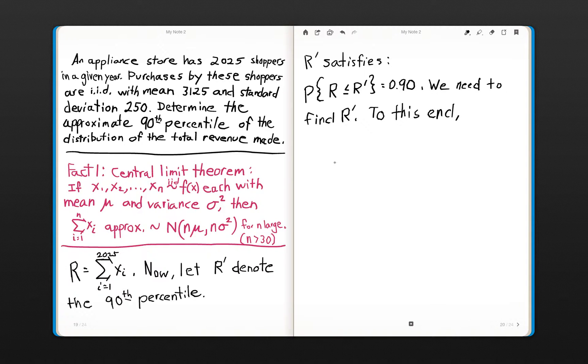To this end, we need to do a standardization or transformation of R. This is very common in statistics and probability, to subtract off the mean and divide by its standard deviation.